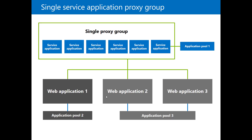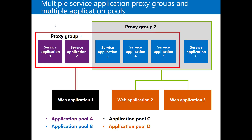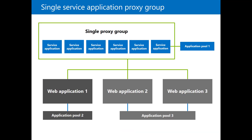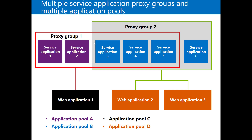A service application can share an application pool or use a unique application pool only for itself. In the first diagram, we have three web applications — first, second, and third — and all of them use a single proxy group. This single proxy group contains all the service applications. Each web application uses its own application pool, but you can also share application pools.